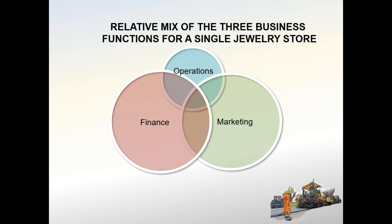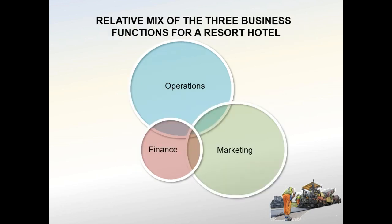For a jewelry store, finance and marketing are larger relative functions while operations are significantly less — likely taking a just-in-time approach to inventory, avoiding stockpiling expensive jewelry. For a resort hotel, operations involves hospitality management, marketing is large to draw customers, and finance is more narrowly focused on revenue from stays and bookings.